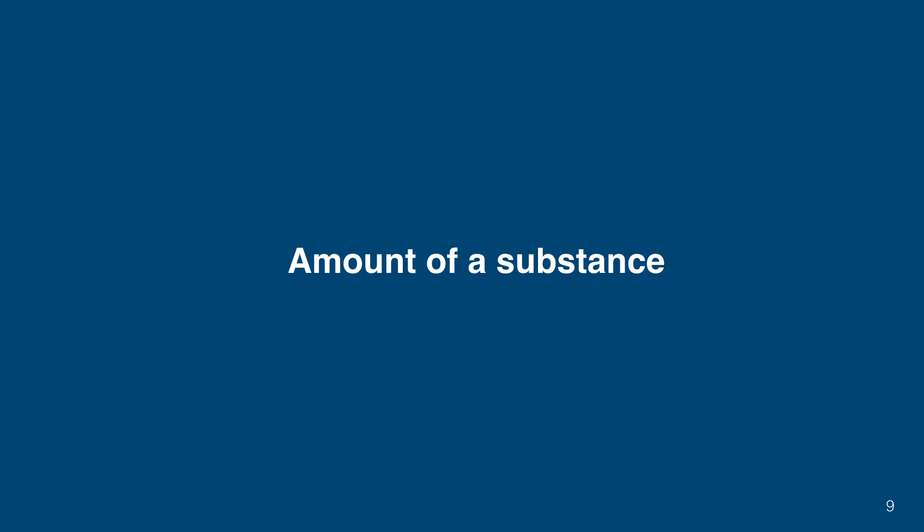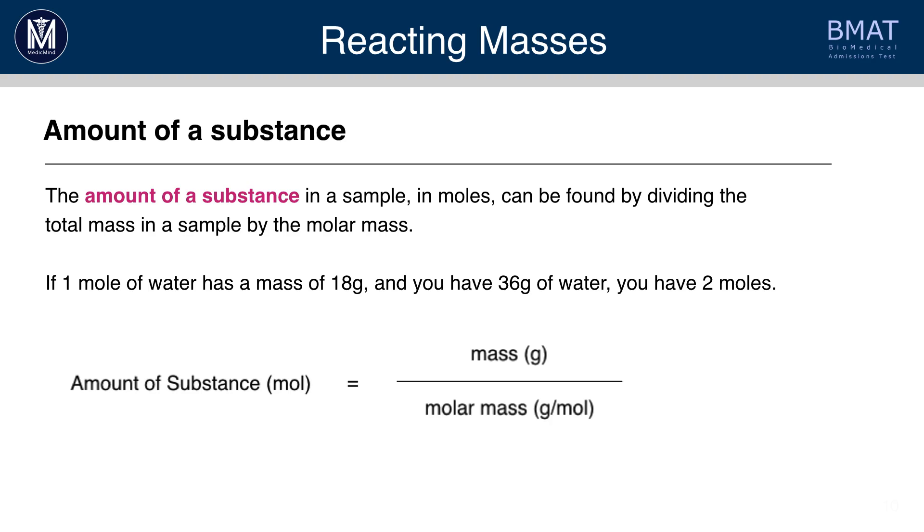Now let's look at the amount of a substance, the mole, and how it links in to molar mass. Well, if molar mass is the number of grams for one mole, then we can divide the total mass of a sample by the molar mass to find out how many moles we have in that sample. If one mole of water has a mass of 18 grams, and you have 36 grams of water, then you have two moles.